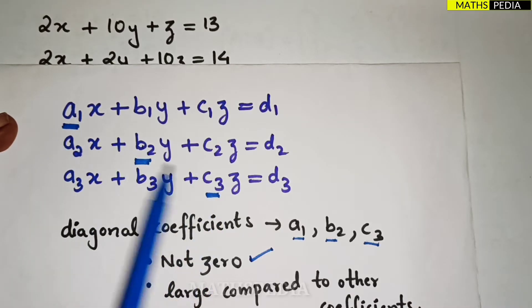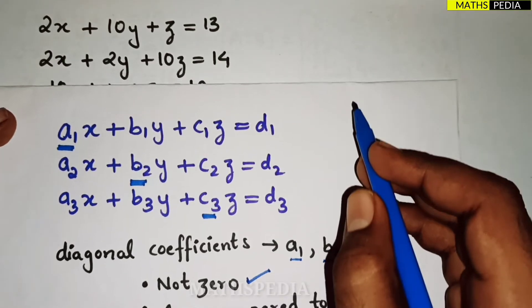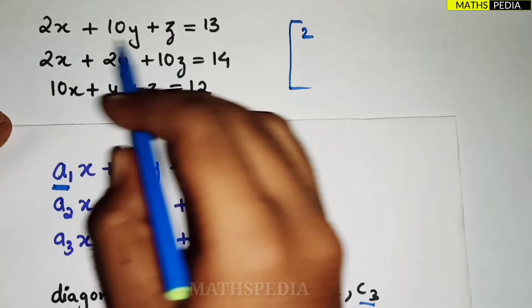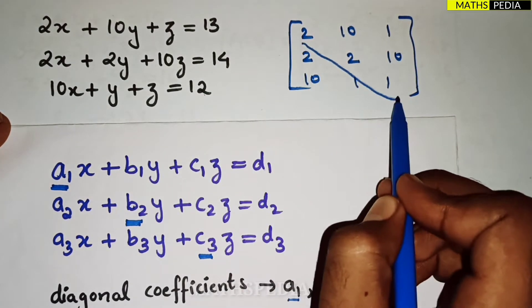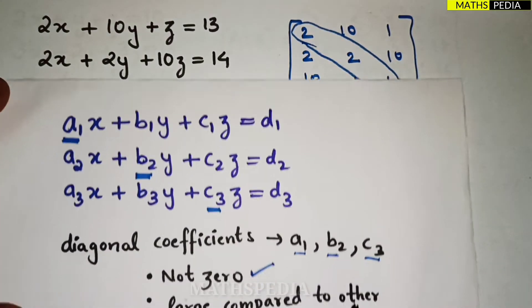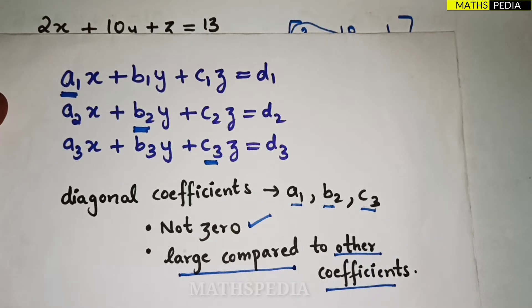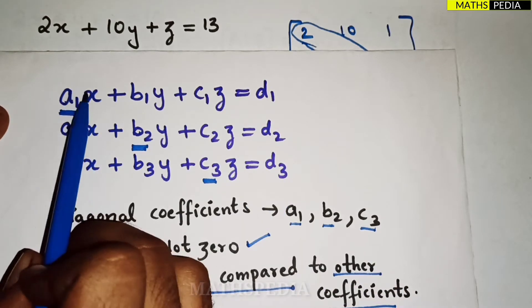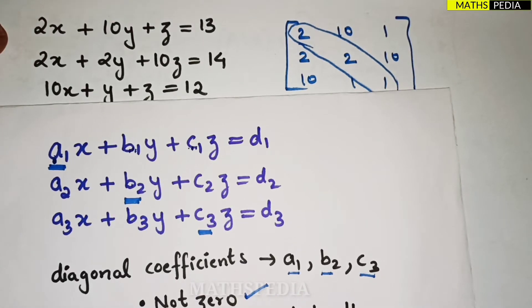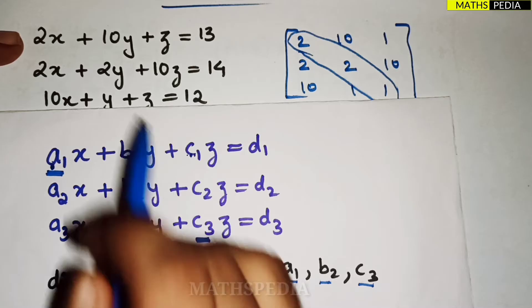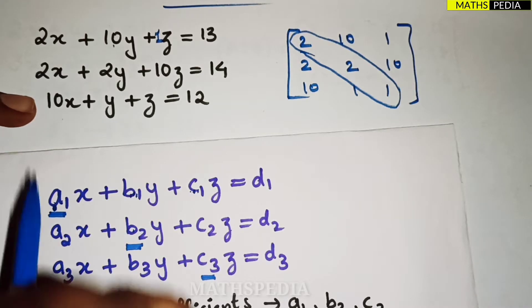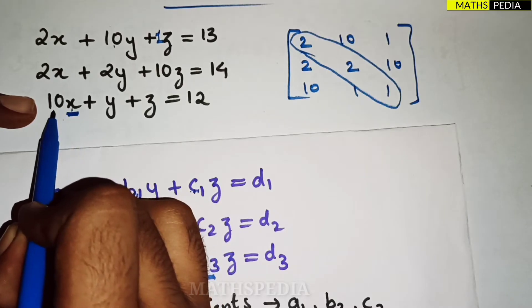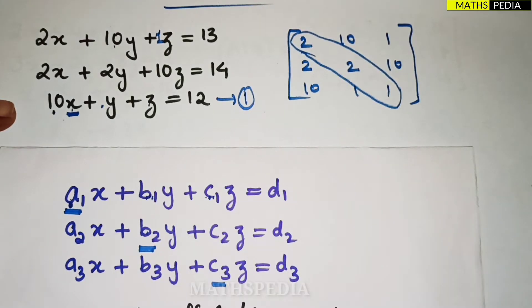When you write the matrix, for example with coefficients 2, 10, 1 / 2, 2, 10 / 10, 1, 1, observe that the diagonal should not be zero and should be a large number compared to the other coefficients. That means in the first equation the coefficient of x should be larger than the other two variables. Since 2 is not larger than 10 here, we have to rearrange the equations.